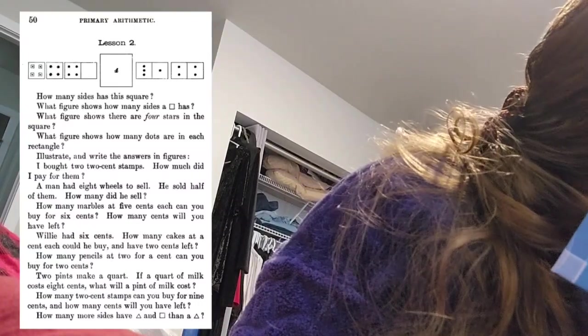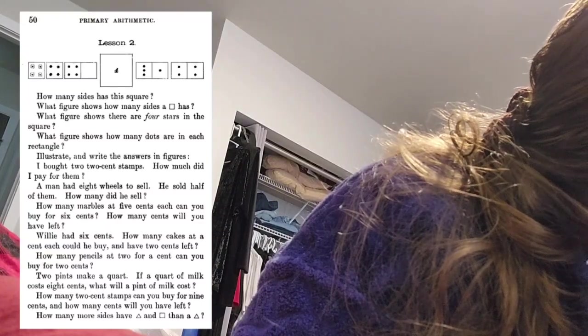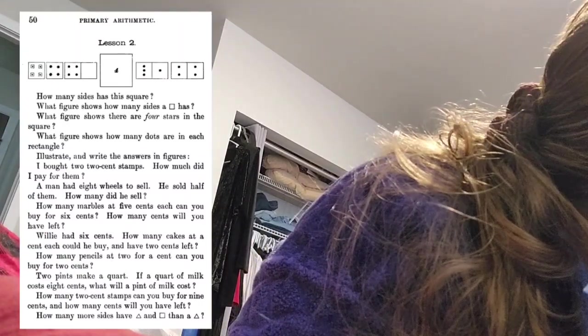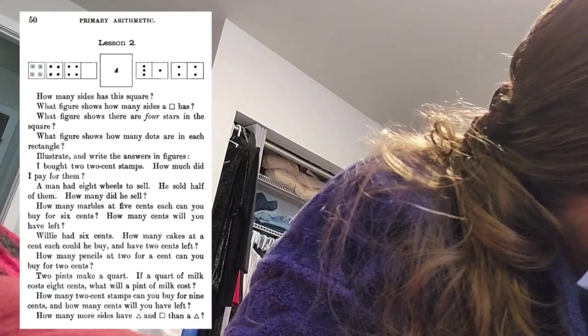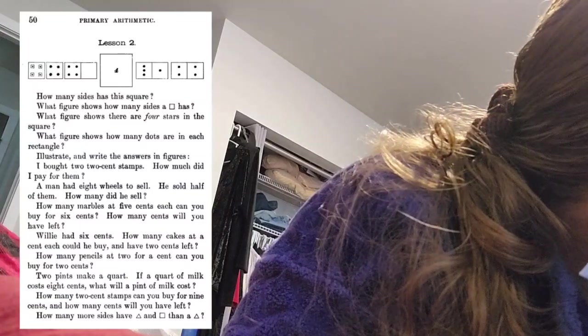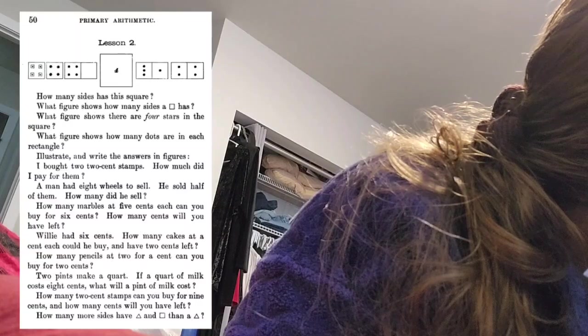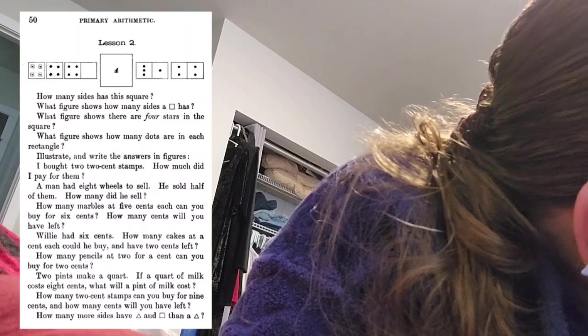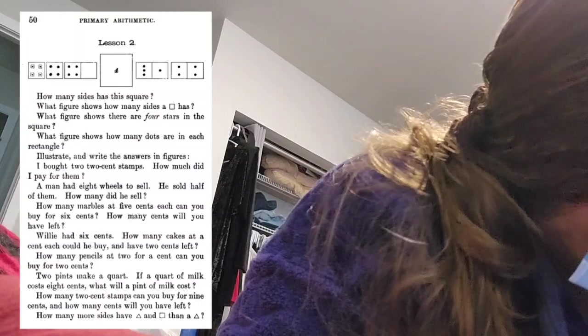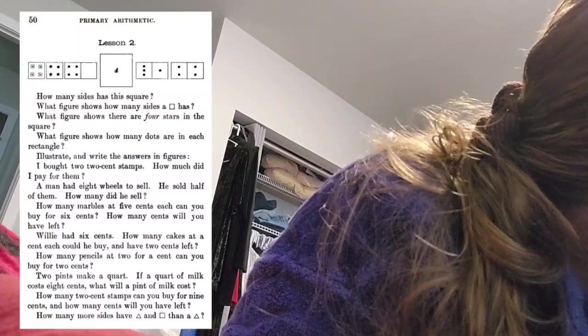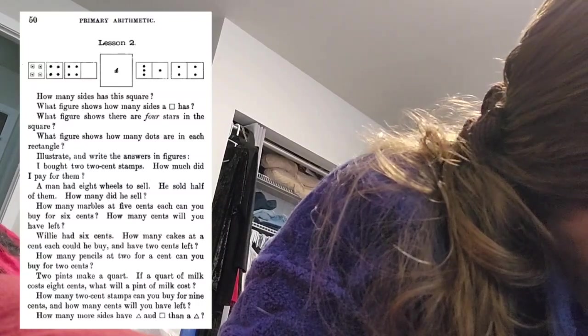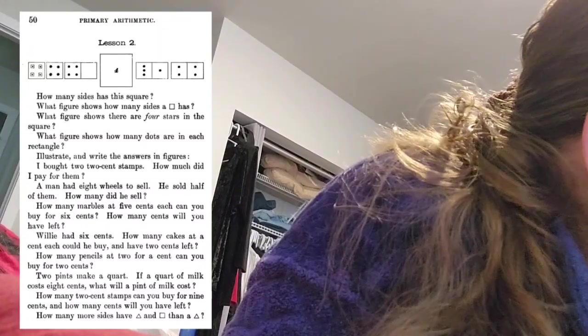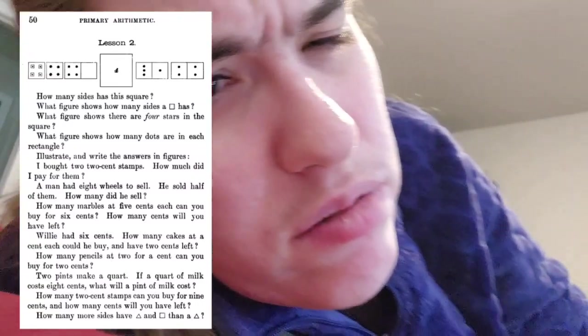Willy had six cents. How many cakes at a cent each can he buy and have two cents left? He has six. Well, how much are the cakes? The cakes are one cent. And he has six and he needs to have two left, so he can only get four cakes.